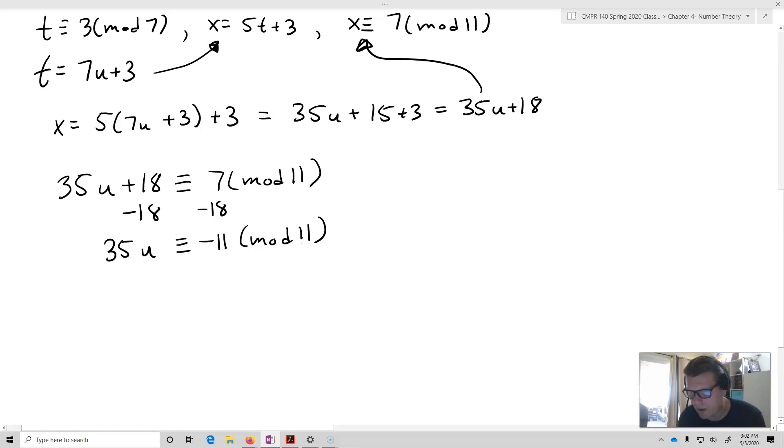Well, this is interesting because it turns out that negative 11, that's 0 mod 11. So that means that 35u is congruent to 0 mod 11. And so u is equal to 0 mod 11, or u is congruent to 0 mod 11.